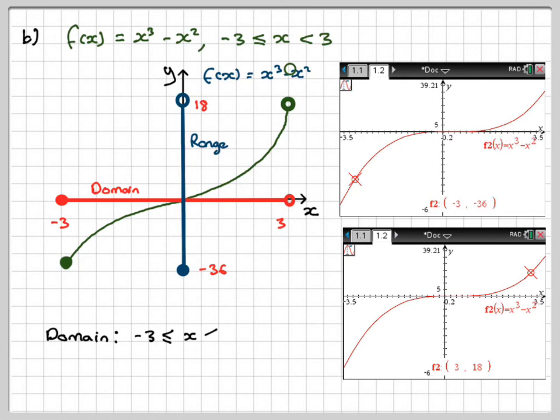Writing down the domain, the domain will be from -3 to 3, but not including 3. The range will be from -36, but not equal to 18, but less than 18. So it's very important that you distinguish that when you're doing this type of question.